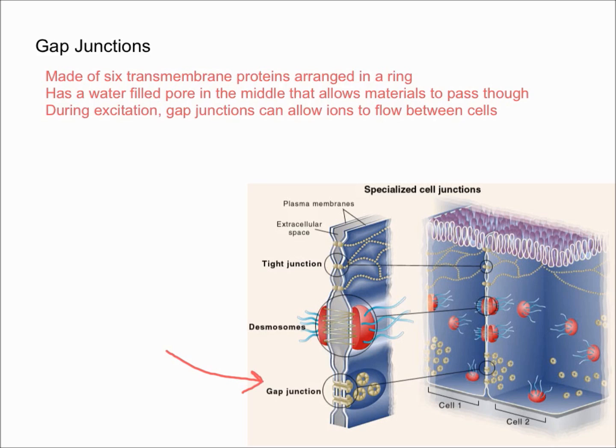This pore is a space that materials can pass through. The pore allows things such as ions, glucose, amino acids, and other solutes to pass from cell to cell. When cells are excited, gap junctions can also allow ions to rapidly flow between cells.